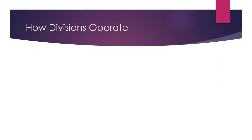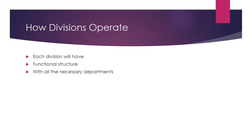How do divisions operate? Each division will have its own functional structure with all necessary departments — for example, a marketing department, production department, and finance department — to operate in a particular market segment.